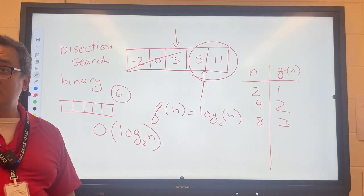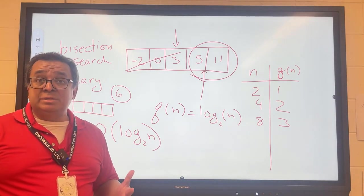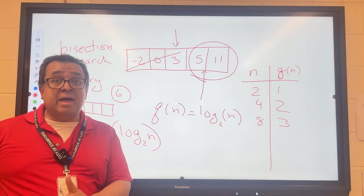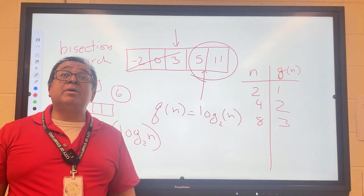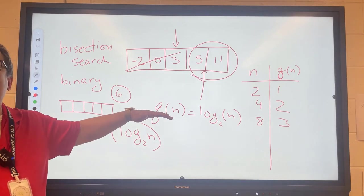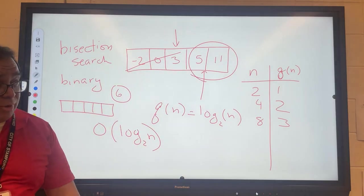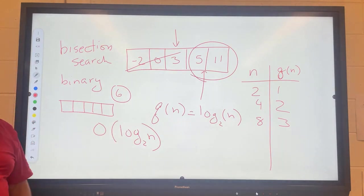If you're only going to search the array once, then it's too painful to sort the array. It takes too long. Instead, just leave it unsorted and go through the pain of a linear search. But if you're going to search that array more than once, whether it's twice, three times, a thousand times, then you're better off sorting the array once and then continuing with the bisection search each time you want to do the search.